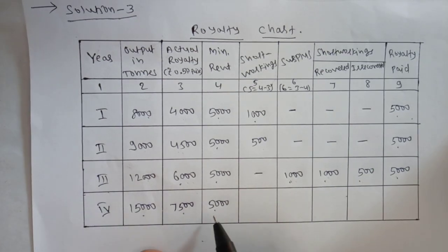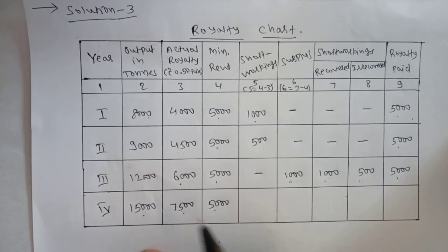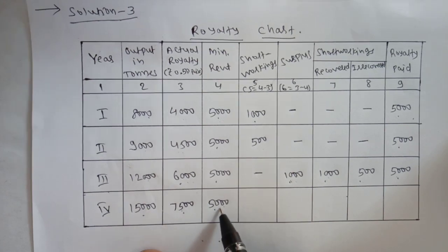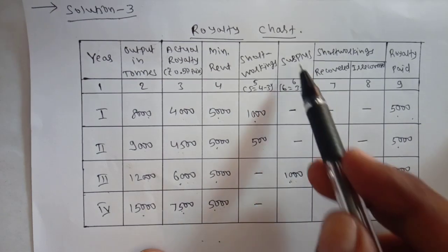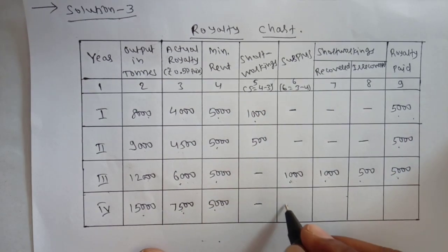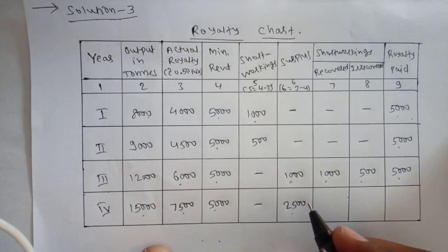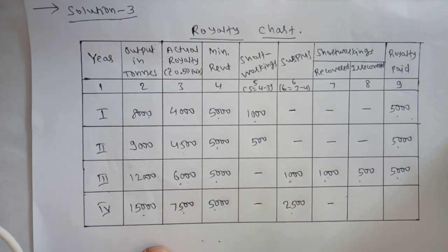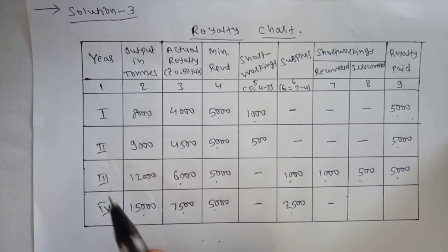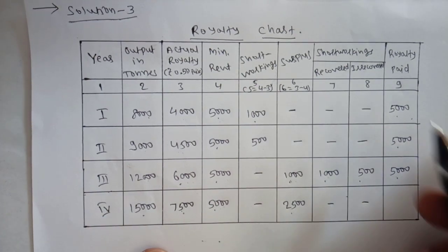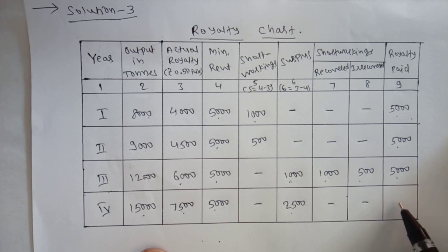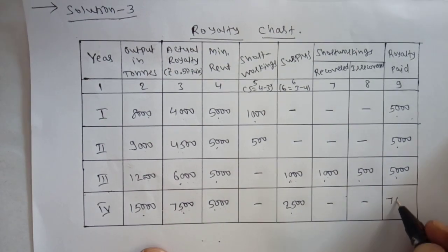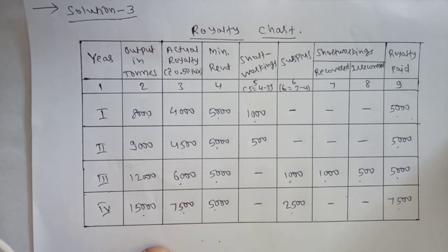In the fourth year, 7,500 is actual royalty and minimum rent is 5,000. Actual royalty is more than minimum rent, so there are no short workings and there is a surplus of 2,500. There is no recovery because recoupment of short workings is available up to the third year only — no recovered, no irrecovered amount. Actual royalty paid is 7,500. This is the solution for the problem. Thank you.